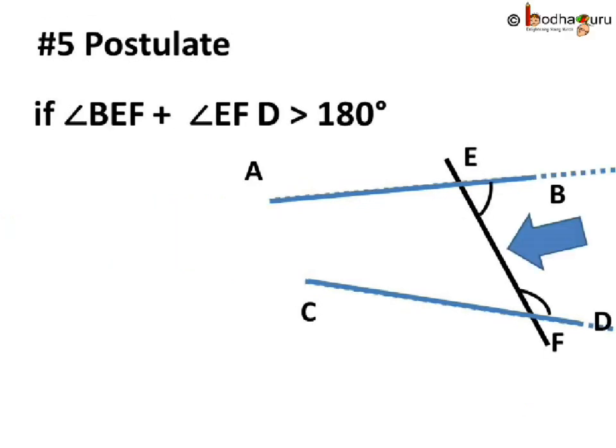But the lines would not meet on the other side if extended. On the other side, that is on the right side of the intersecting line, angle BEF plus angle EFD is greater than 180 degrees. Look carefully, AB and CD would move further if we extend them on the right hand side.